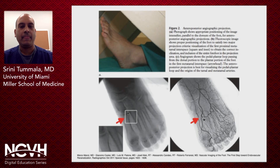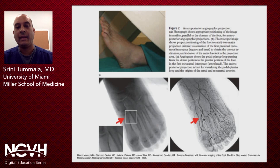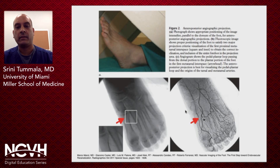Again, you want to look at this first space between the first and second metatarsal — that is your landmark for where the first turn from the dorsalis pedis to the deep perforating artery is going to happen. And then at the base of the third metatarsal, maybe the fourth, is when you'll get your next turn into the lateral plantar artery to complete the pedal plantar loop.